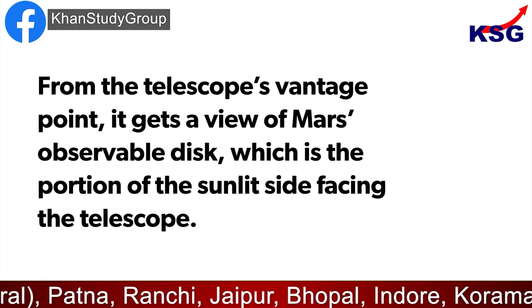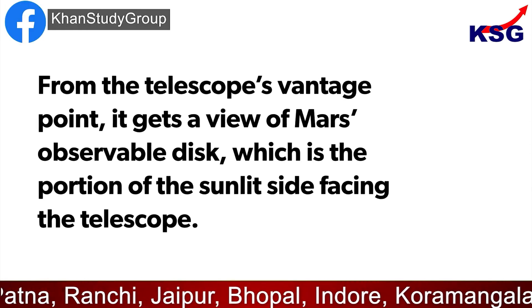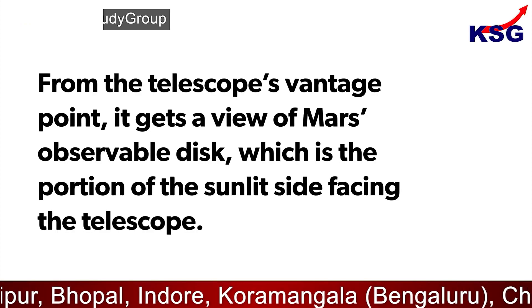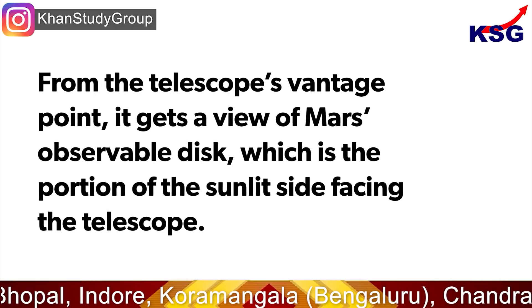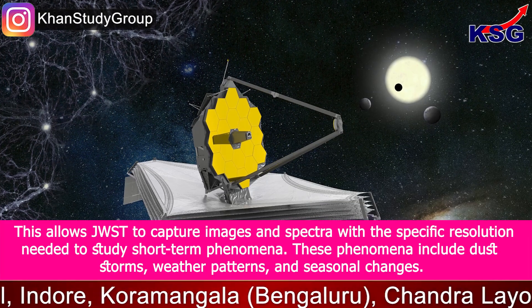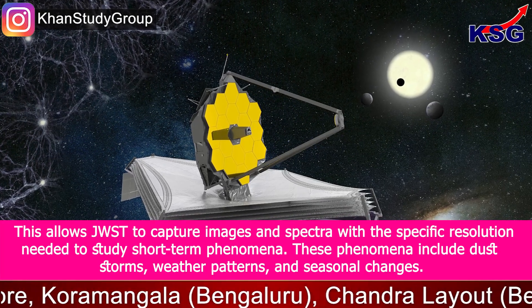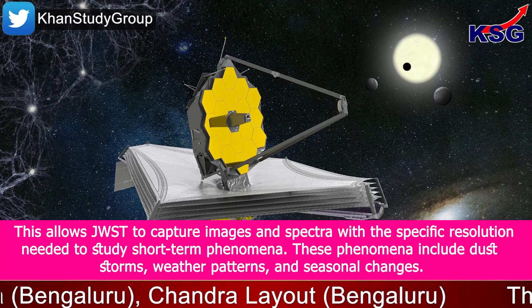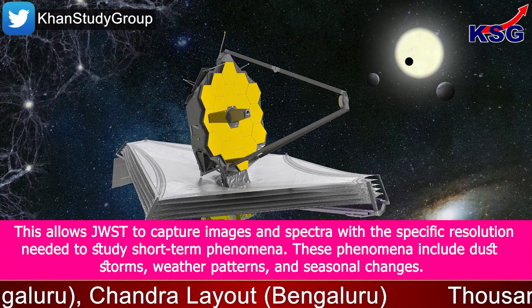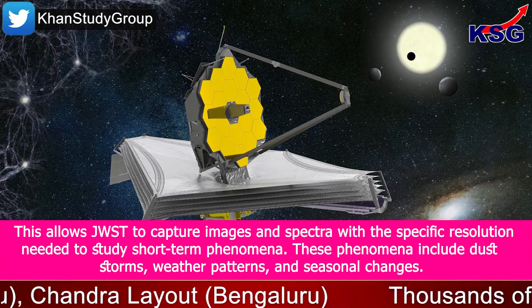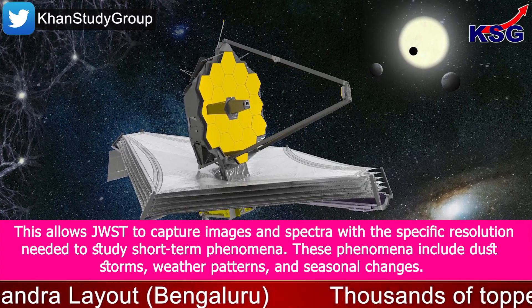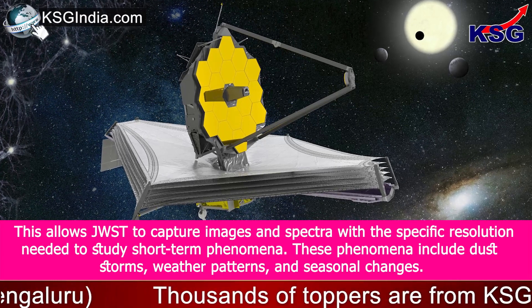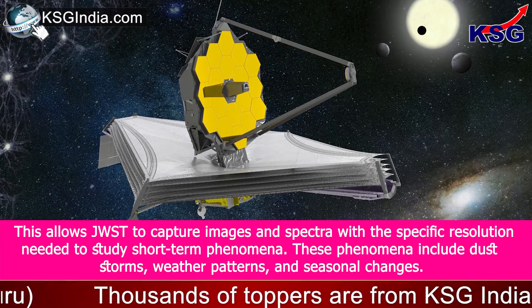From the telescope's vantage point, it gets a view of Mars' observable disk, which is the portion of the sunlit side facing the telescope. This allows JWST to capture images and spectra with the specific resolution needed to study short-term phenomena, including dust storms, weather patterns, and seasonal changes.